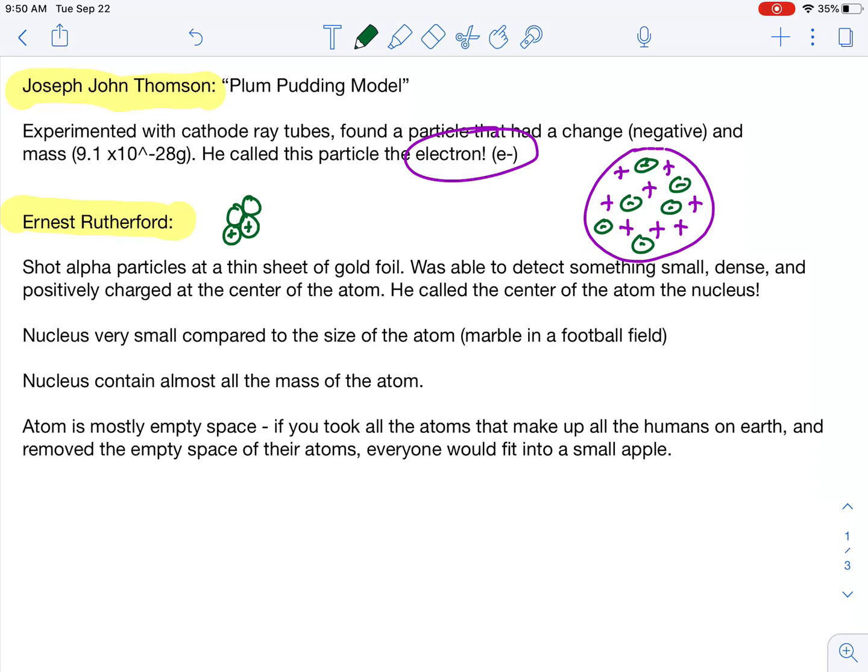And a thin sheet of gold foil. And it was able to detect something small, dense, and positively charged at the center of the atom. He called that the nucleus. So Rutherford, this kiwi who is from New Zealand, discovered the nucleus.